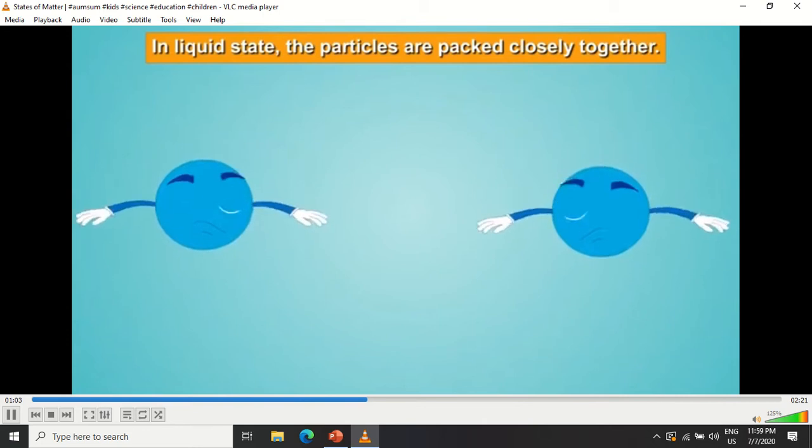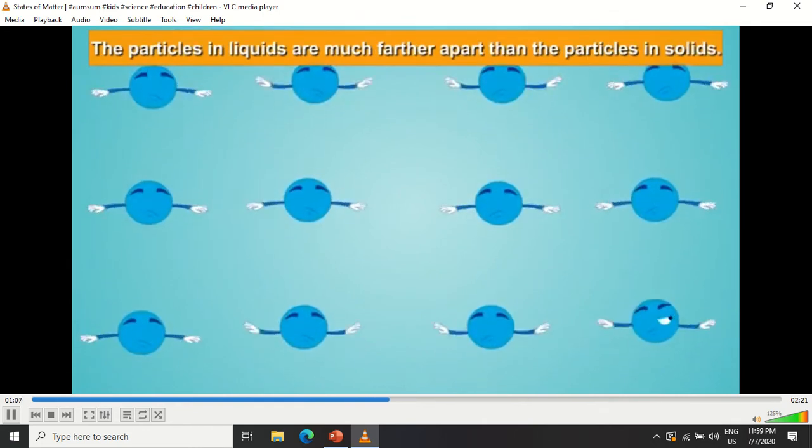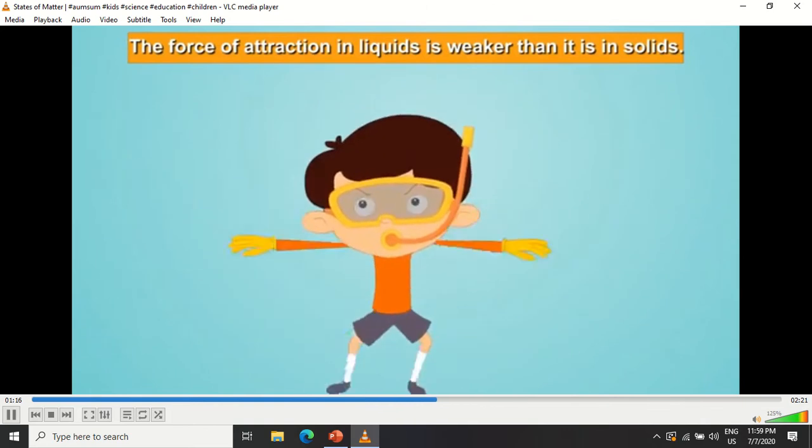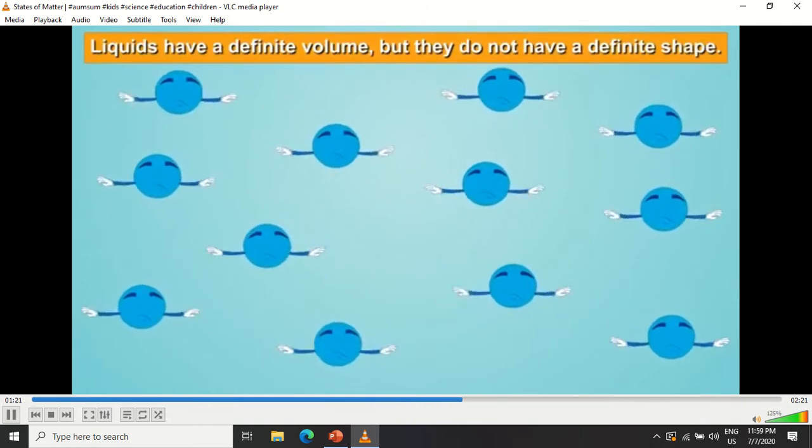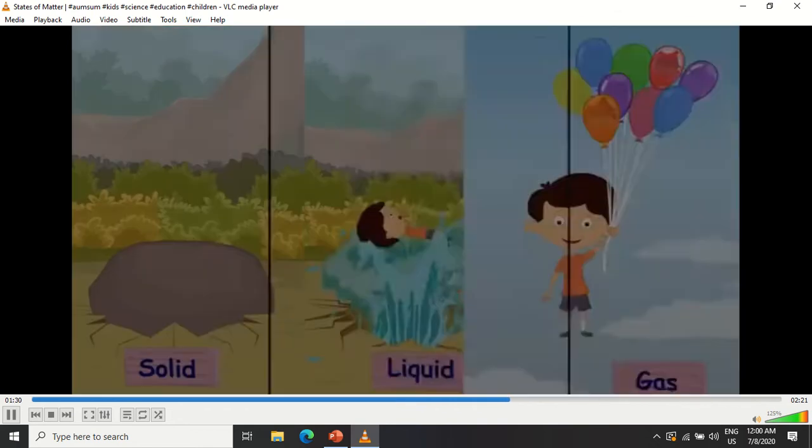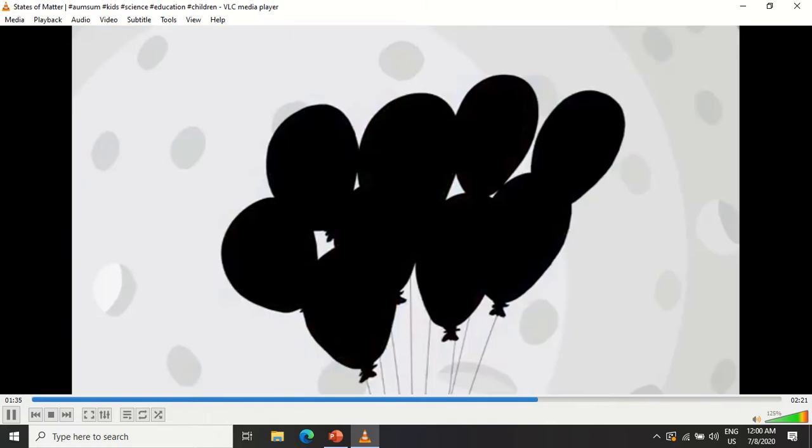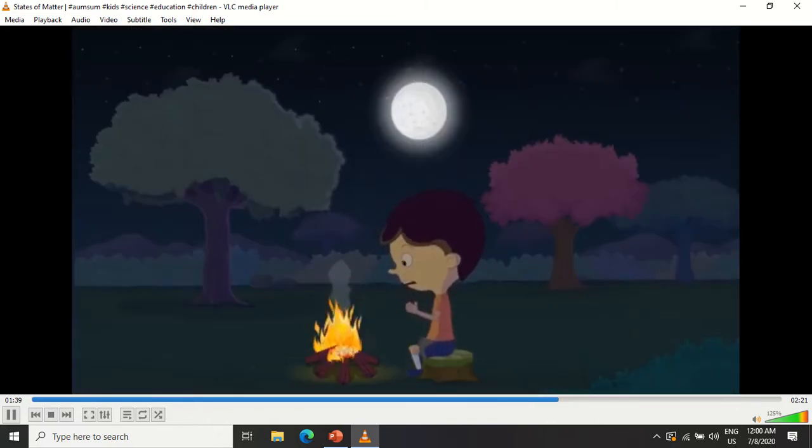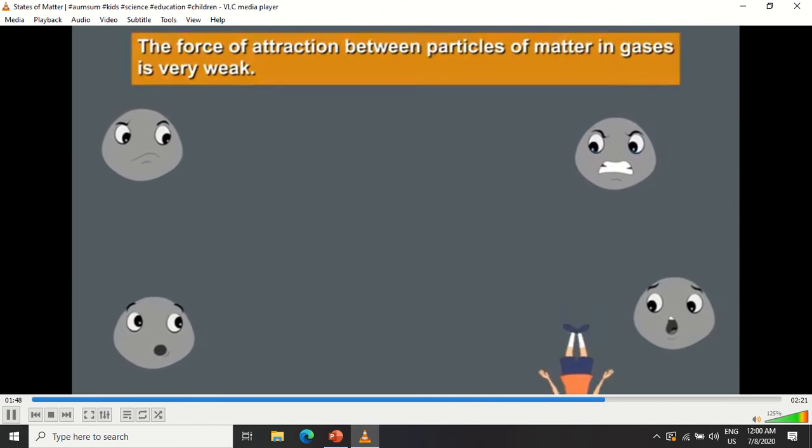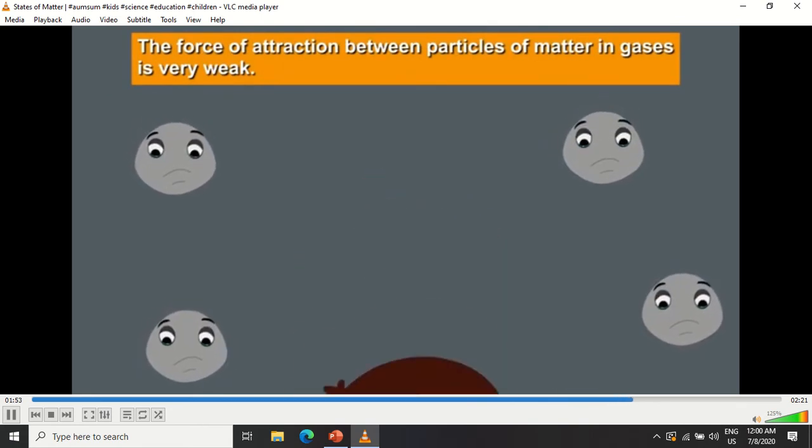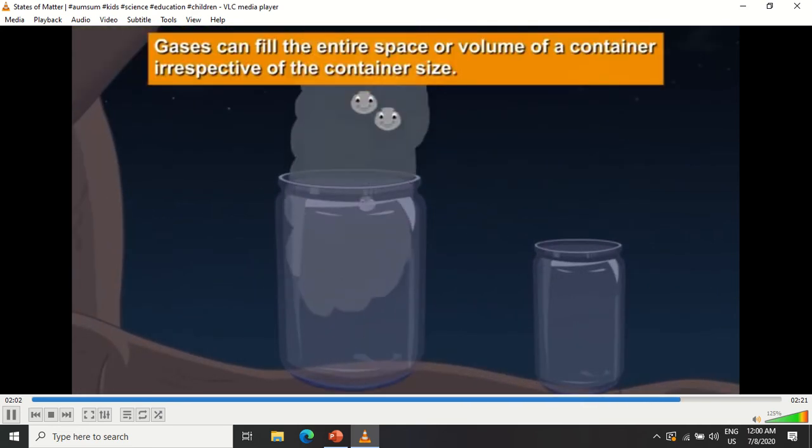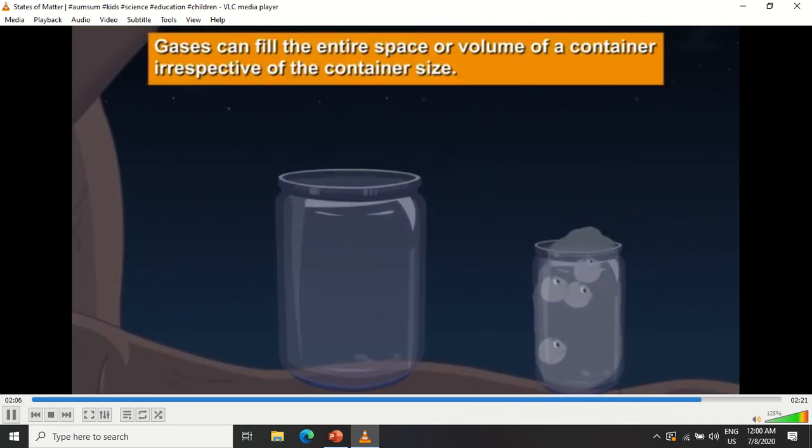In liquid state the particles are packed closely together but they are much farther apart than the particles in solids and so the force of attraction is weaker than it is in solids. Therefore liquids have a definite volume but they do not have a definite shape. They take out the shape of the container in which they are kept. In gases the particles of matter are very far away from each other and so the force of attraction between them is very weak. Thus gases have neither a definite shape nor volume. They can fill the entire space or volume of a container irrespective of the container size.